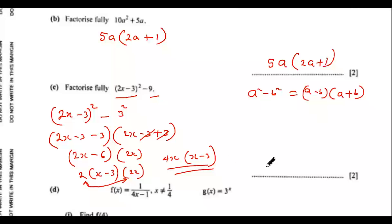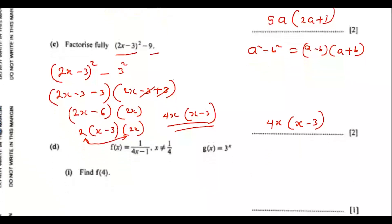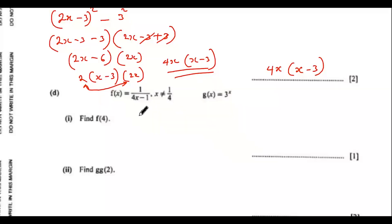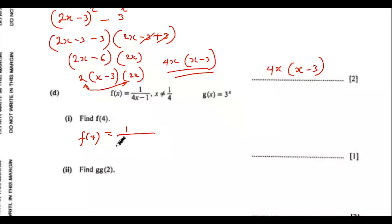So f of x equals to 1 over 4x, and g of x gives us 3 to the power of x. Find f of 4. Since f of x equals to this, f of 4 means we replace x with 4. So f of 4 equals to 1 over 4 times 4, minus 1. This is 1 over 16 minus 1, which is 1 over 15. So we have 1 over 15.